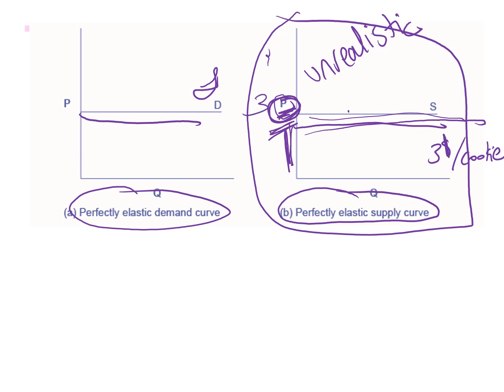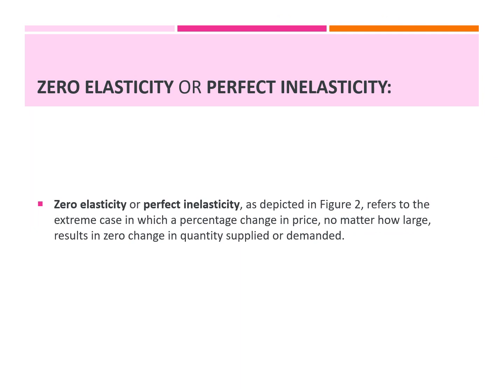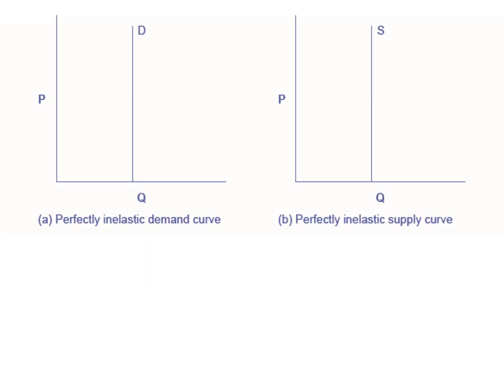Any change in price would result in a change in quantity supplied to infinity or zero, depending on whether price increased or decreased respectively. Now I will be explaining zero elasticity or perfect inelasticity, shown in figure two. This refers to extreme cases in which a percentage change in price, no matter how large, results in zero change in quantity supplied or demanded. For the formula, you will always get an answer equal to zero.